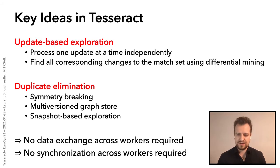Now, there are two key ideas in Tesseract. The first key idea is update-based exploration, where we process one update to the graph at a time in isolation and completely independently of other updates. On top of that, we use a differential mining technique to find all the corresponding changes to the match set resulting from this update. The second idea is a series of techniques to avoid exploring duplicate matches. So these three techniques are an updated symmetry breaking approach that works for evolving graphs, the use of a separate multi-version graph store with various versions of the graph corresponding to updates, and an optimization that we call snapshot-based exploration. Now, the result of these techniques is that no data exchange or synchronization is necessary across workers, which allows Tesseract to process updates in a truly task parallel fashion.